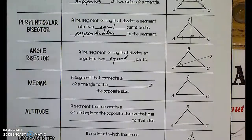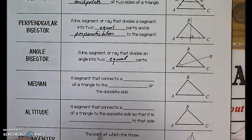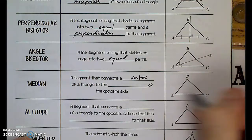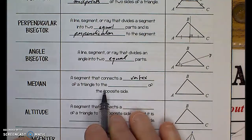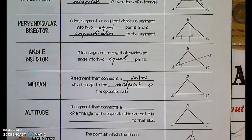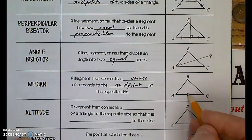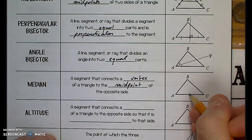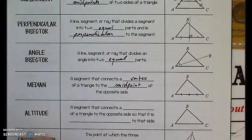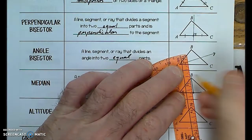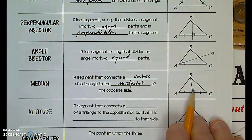Then we have the median — a segment that connects a vertex, which is the point where two lines of the triangle meet, to the midpoint of the opposite side. So if I take this vertex, I join it to the midpoint of the opposite side. That line segment is my median.